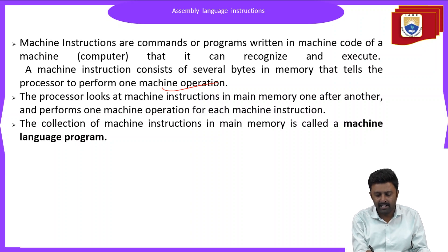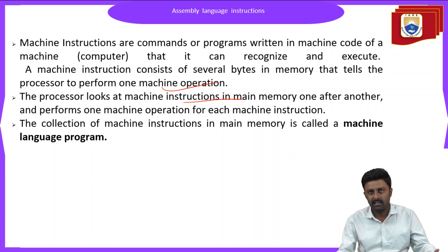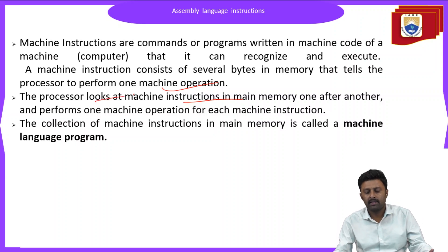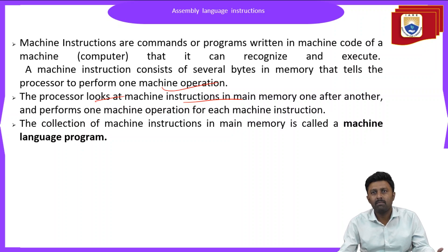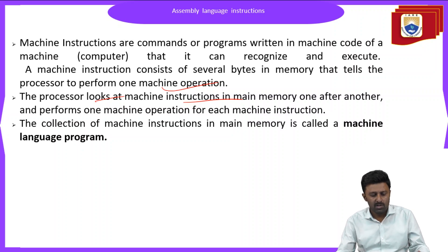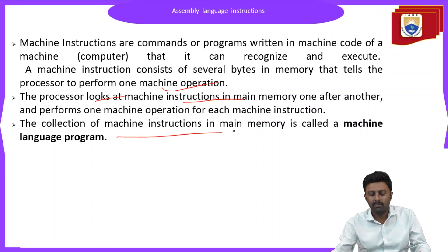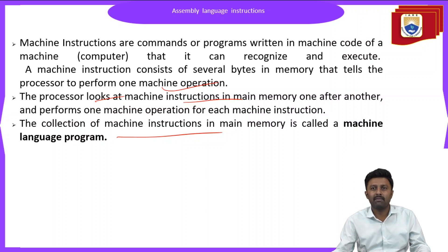The processor looks at each machine instruction in the main memory one after another. Once we write the instructions in a program, the processor looks into the machine instructions from the main memory one by one and executes them one by one, performing one machine operation for each machine instruction. Such a collection of machine instructions in the main memory is called the machine language program.